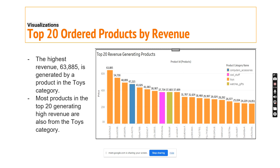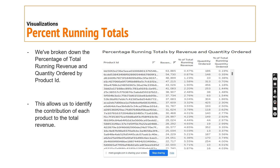With regards to the top 20 ordered products by revenue, they belong to the toys category. The highest revenue generation is approximately 63 to 64 thousand US dollars, which belongs again to the toys category. As observed previously, most of the top 20 ordered products by revenue belong to the toys category.